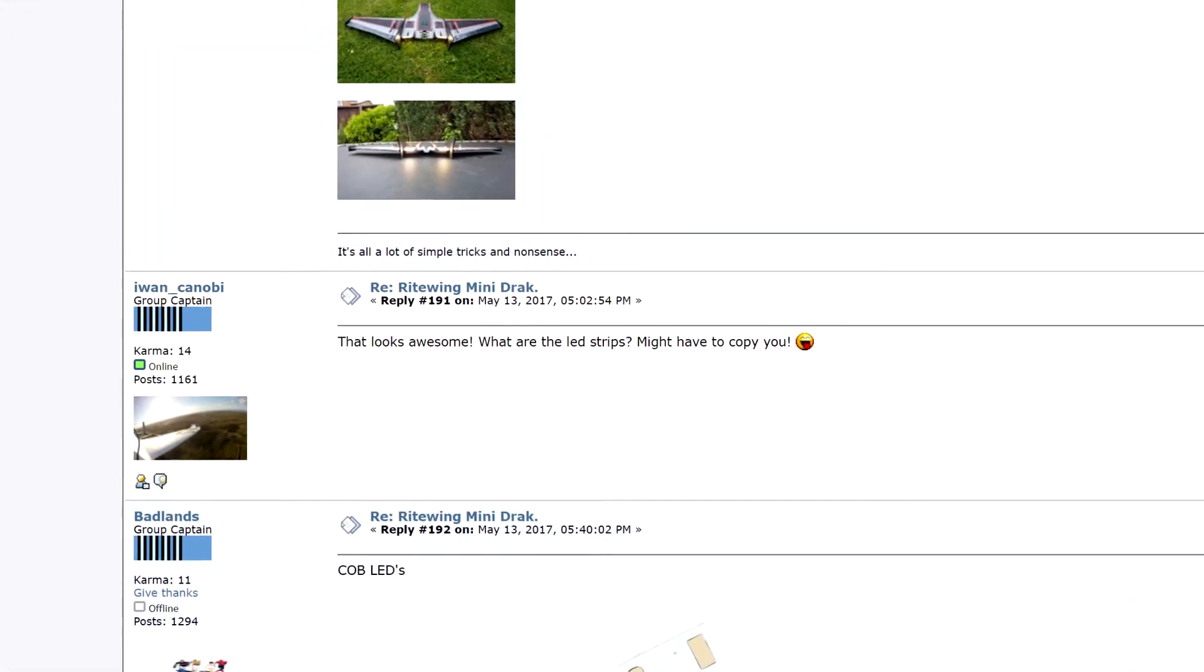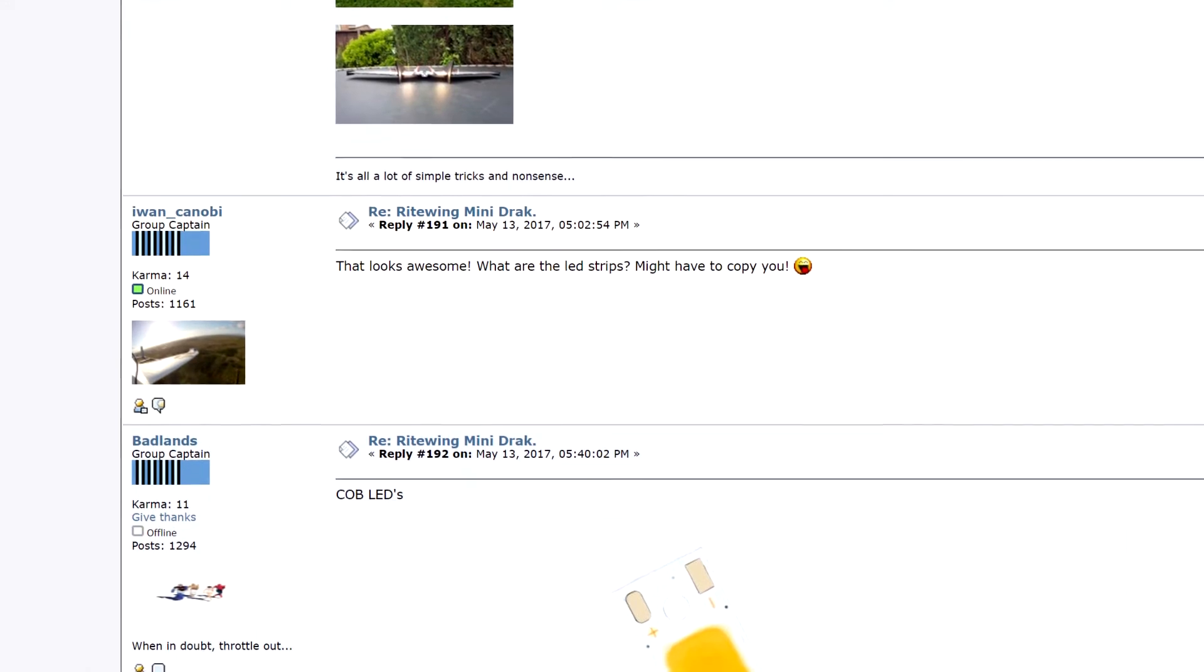These came to my attention during my Mini Drak build. I was looking through some threads and Badlands over on FPV Hub had posted about these COB LEDs as he'd included them on the back of his Mini Drak and it looked really good.